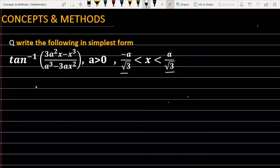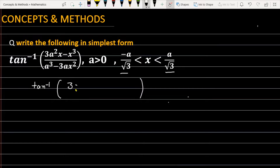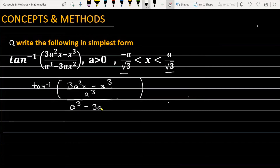First of all, I will make changes in the given expression. For the changes, what we do is divide both the numerator and denominator by a raised to the power 3. If I divide, the numerator becomes 3a²x minus x³ divided by a³.